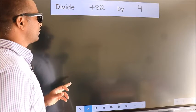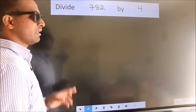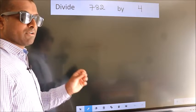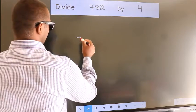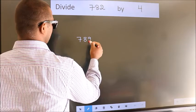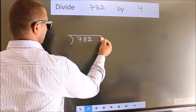Divide 782 by 4. To do this division, we should frame it in this way. 782 here, 4 here.